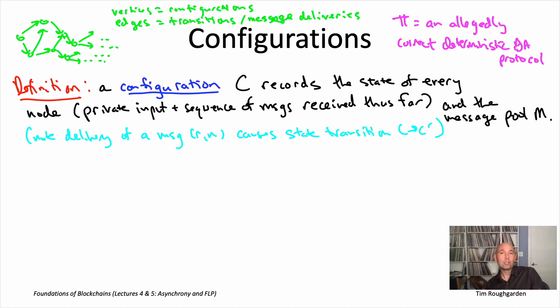Now, don't forget, message deliveries are in effect controlled by an adversary. So from a given configuration, there may be many transitions possible, because each different message that could be delivered could lead to a different transition between configurations. And so because an adversary can pick which message gets delivered, it basically gets to pick which of the possible transitions occurs.